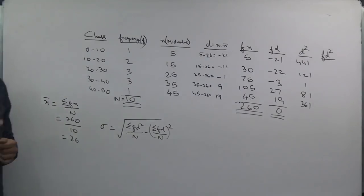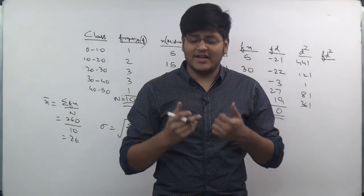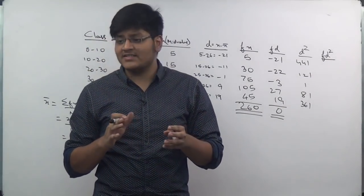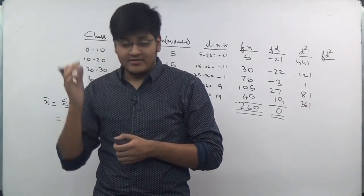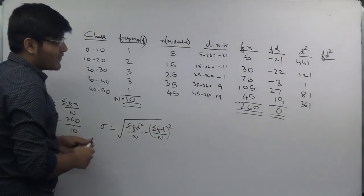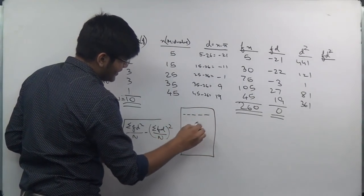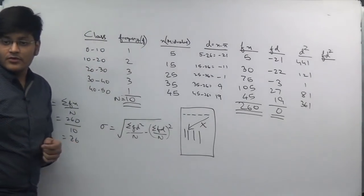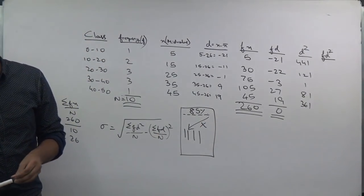A practical exam tip: if a five-mark statistics sum has many columns and you cannot fit them in portrait mode, switch to landscape — it is allowed in any examination. If you split the table across two halves of the page, the columns will rarely match up and you are likely to make mistakes. Practice in landscape mode as well.